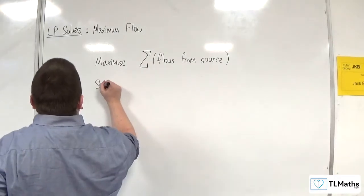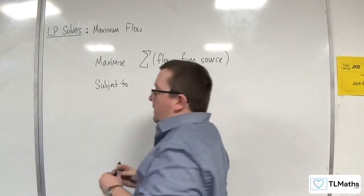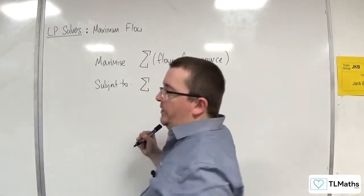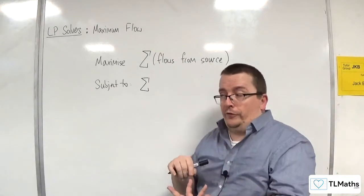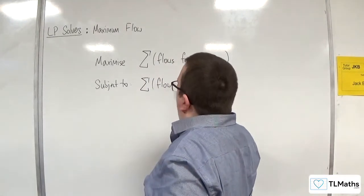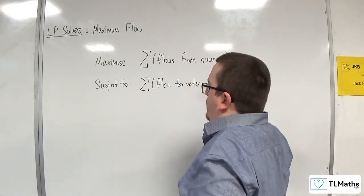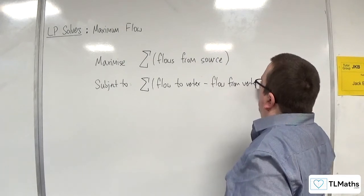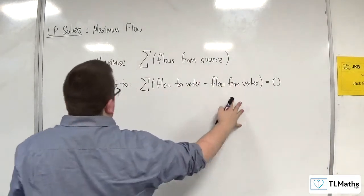And then subject to, what we're going to need for each of the vertices that aren't the sink or the source. Because we want the sum of the flow to the vertex, take away the flow from the vertex, and that's got to be equal to zero, because the flow in has got to equal the flow out.